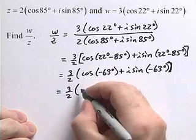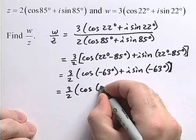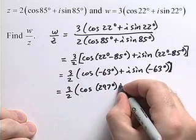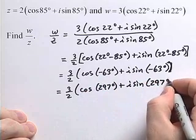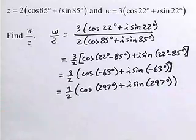So we can rewrite this as 3 halves times the cosine of 297 degrees plus i times the sine of 297 degrees. And there's our quotient.